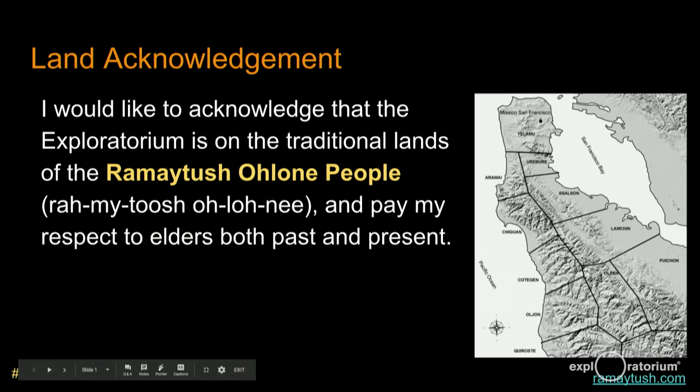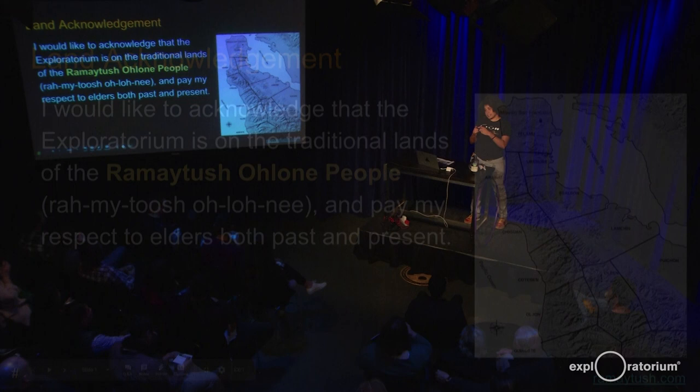Hello, everybody. How are we doing? So before I begin, I would like to give an acknowledgement that the land we are currently on at the Exploratorium is the traditional land of the Ramaytush Ohlone people. In particular, the Yelamu tribe was the steward of this particular land. I think it's important to acknowledge history and the elders, both past and present, who took care of this land.